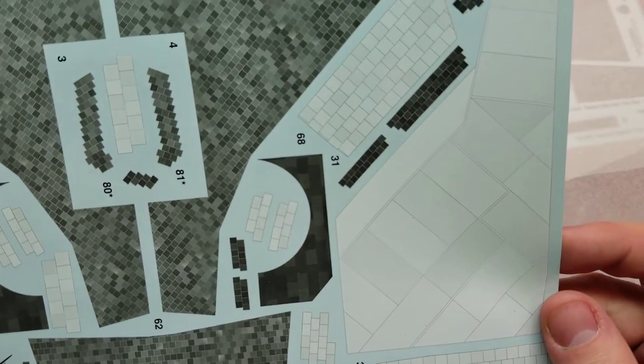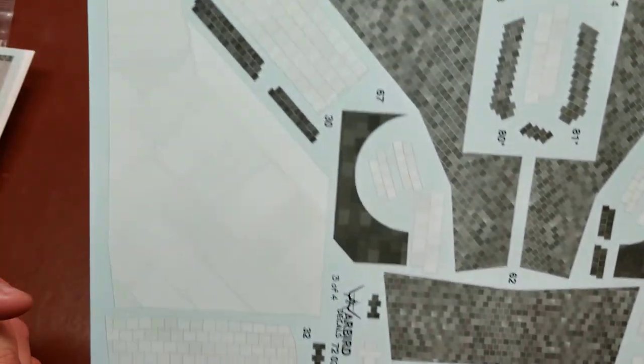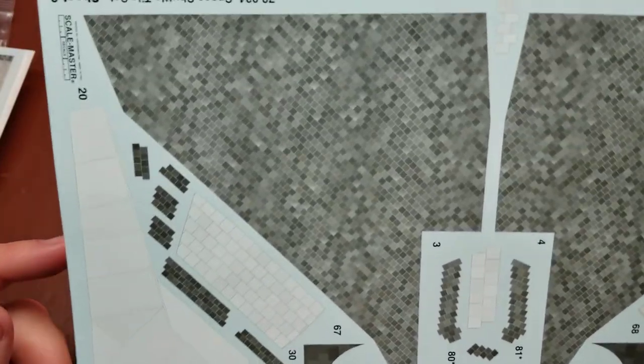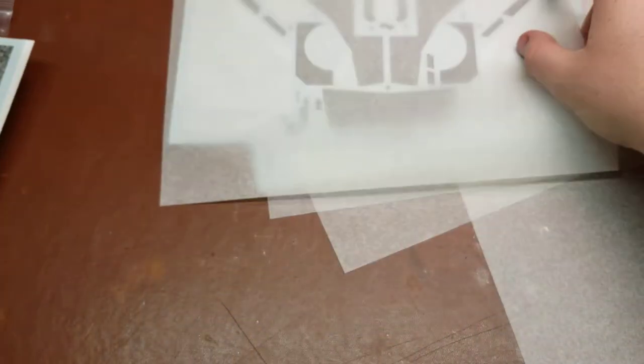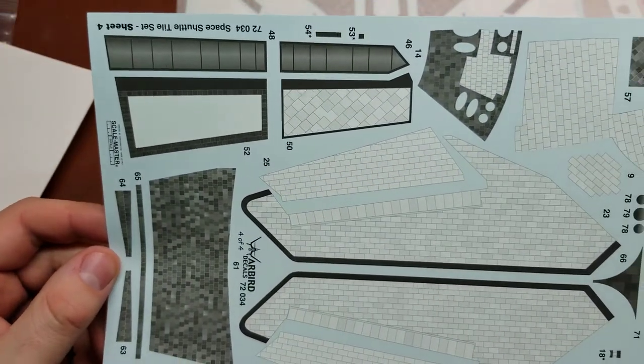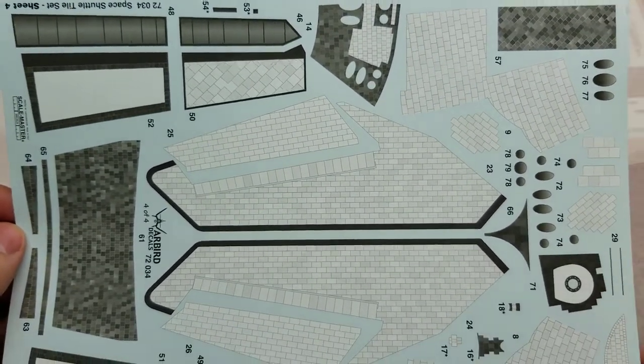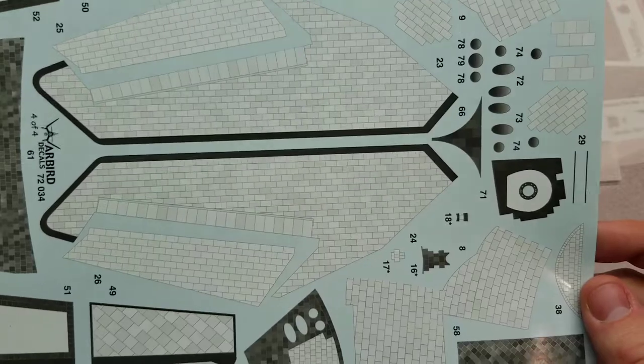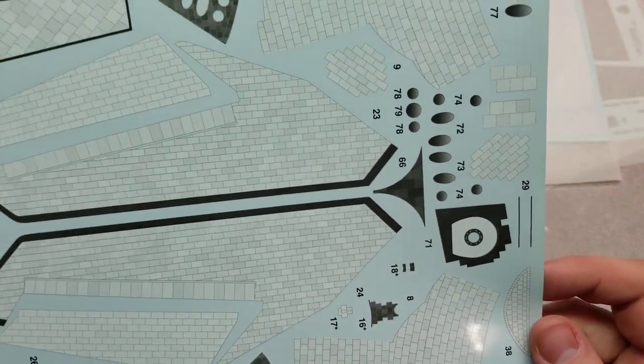The large upper wing tiles, wings themselves, and then our last sheet here. The nose, control surfaces, everything like that.